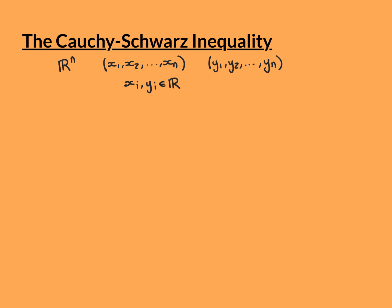The inequality is about two n-tuples of real numbers, which are of course going to be vectors in our n-dimensional Euclidean space R^n. But for now we don't even need to think of them as vectors — we can just think of them as n-tuples of numbers. So we've got one n-tuple: a collection of n real numbers x1, x2, all the way up to xn, where n is some natural number. The inequality works no matter what n you pick, and all the xi's are real numbers.